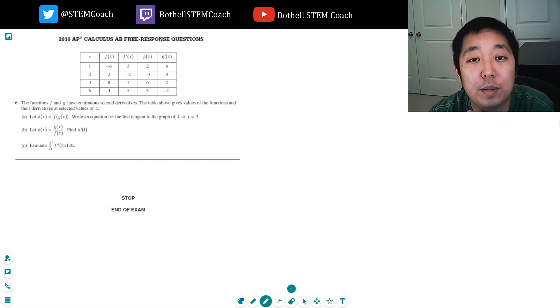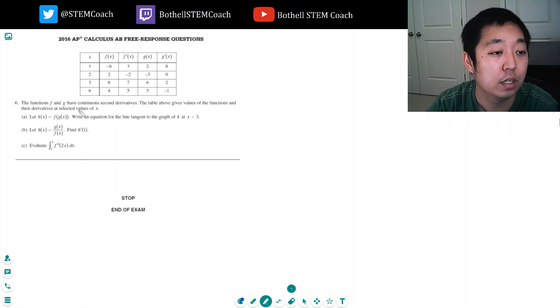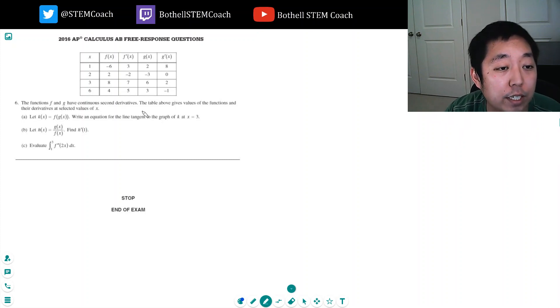Hey guys this is Alan with Bothell STEM Coach and we are wrapping up this 2016 AP calculus free response section. We're looking at number six here. The functions f and g have continuous second derivatives. The table above gives the values of functions and derivatives at selected values of x. Let k of x equals f of g of x.